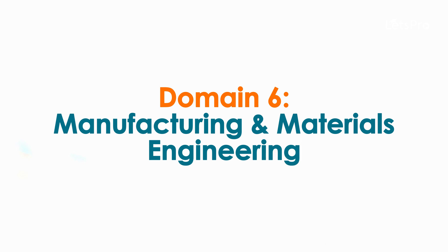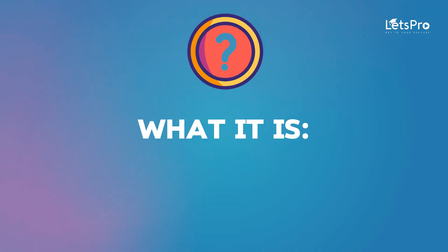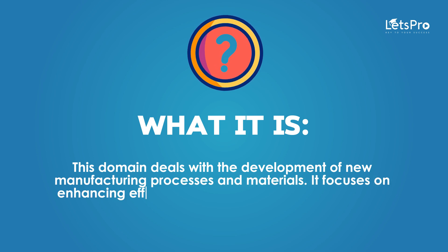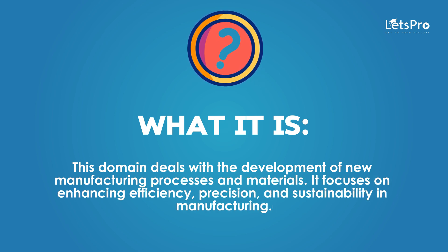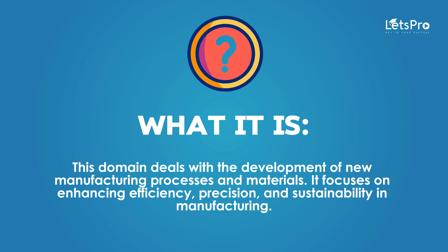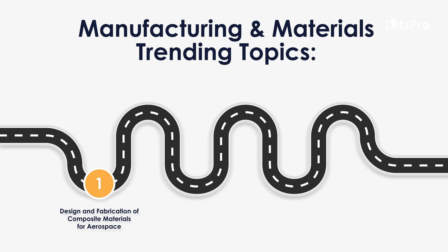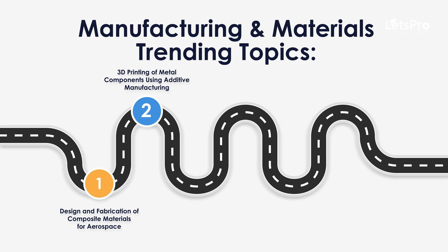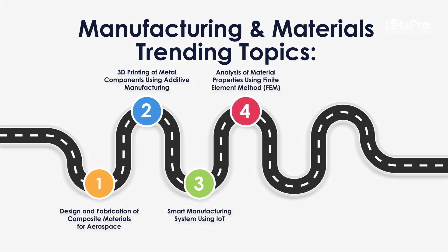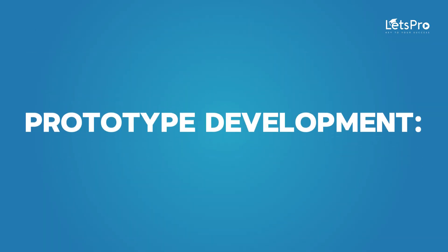Domain 6: Manufacturing and Materials Engineering. This domain deals with the development of new manufacturing processes and materials. It focuses on enhancing efficiency, precision and sustainability in manufacturing. Trending topics include: design and fabrication of composite materials for aerospace, 3D printing of metal components using additive manufacturing, smart manufacturing system using IoT, analysis of material properties using finite element method, and lean manufacturing techniques for waste reduction.